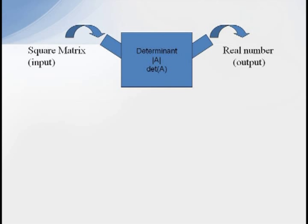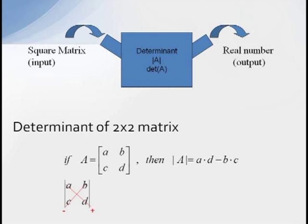First you need to recall that a determinant is a number associated with a square matrix. For a two-by-two matrix with entries A, B, C, and D, the determinant of this matrix is just A times D minus B times C. If you don't remember how to evaluate determinants, you might want to go back and watch my other video on this topic.